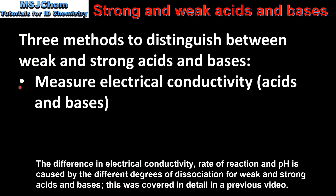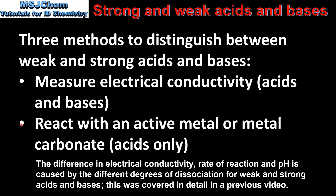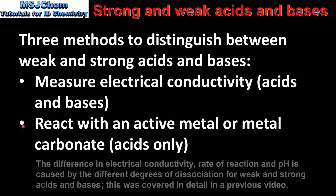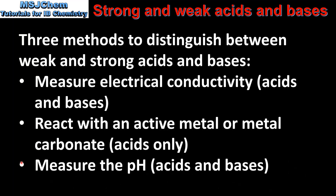The first method is to measure the electrical conductivity, which can be used to distinguish between weak and strong acids and bases. The second is to react with an active metal or metal carbonate, which can only be used to distinguish between weak and strong acids, because bases do not react with active metals or metal carbonates. The final method is to measure the pH of the solution, which can be used to distinguish between weak and strong acids and bases.